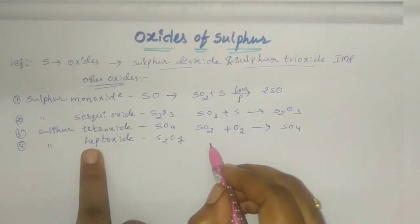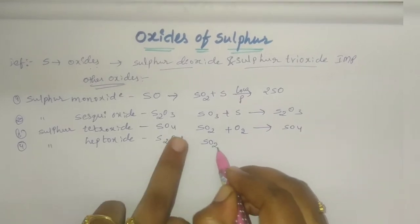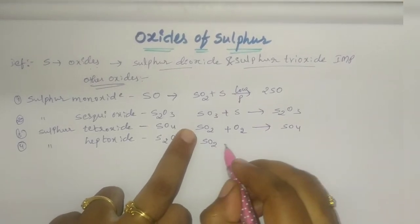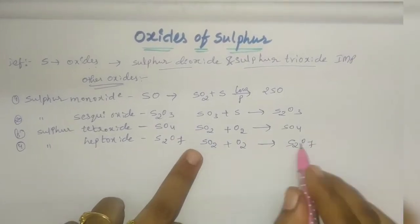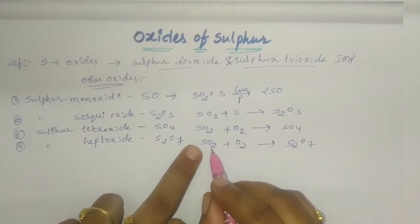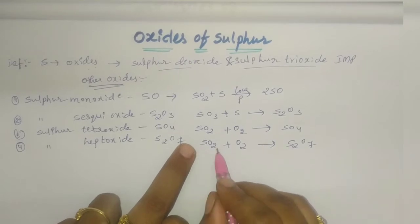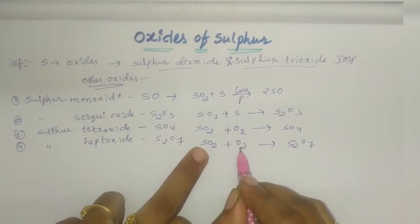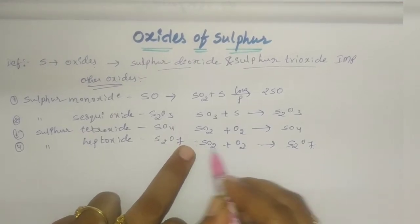Sulfur heptoxide - taking SO2 reacting with O2 to form S2O7. The reaction will not be balanced initially. If we see, sulfur is not balanced here, and we have only 4 oxygens but need 7.